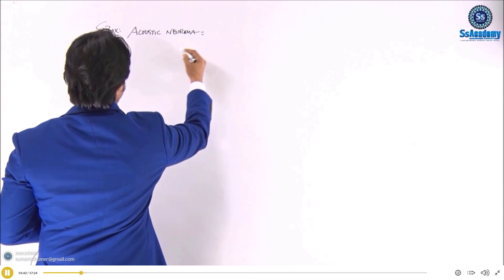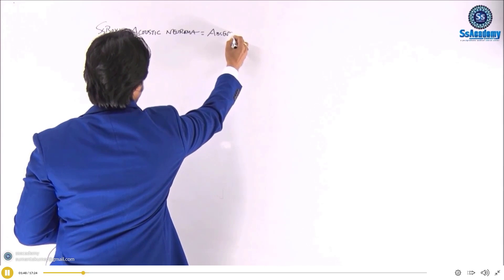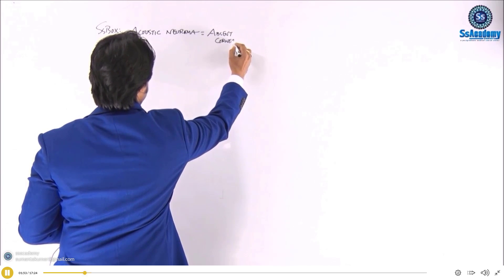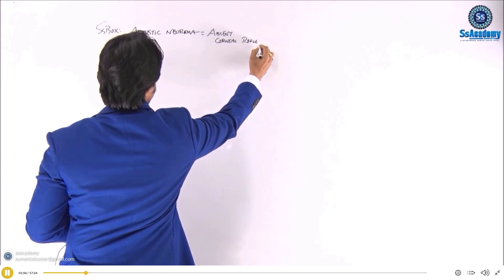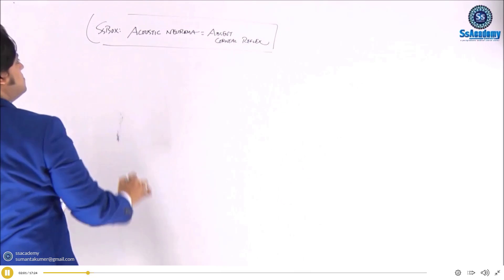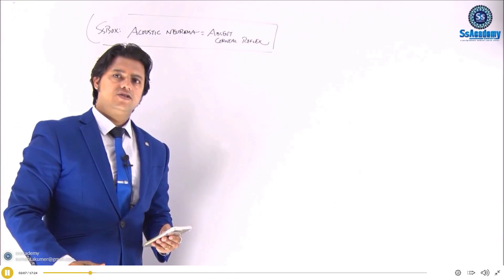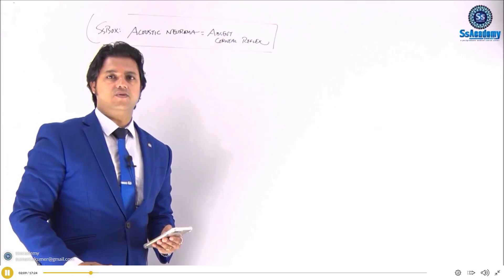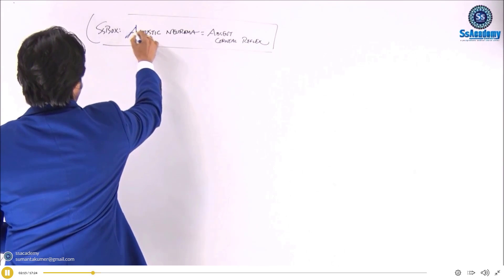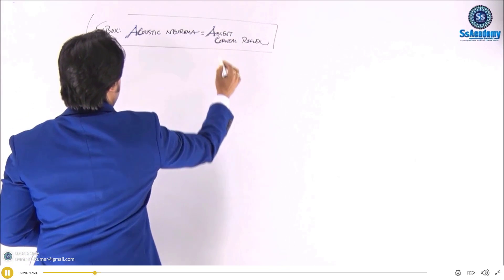For the acoustic neuroma mnemonic, remember: A for absent, C for corneal reflex. This is a pathognomonic feature. So in your exam scenarios, if the corneal reflex is absent, think of acoustic neuroma. A for absent and C for corneal reflex — that will be helpful.